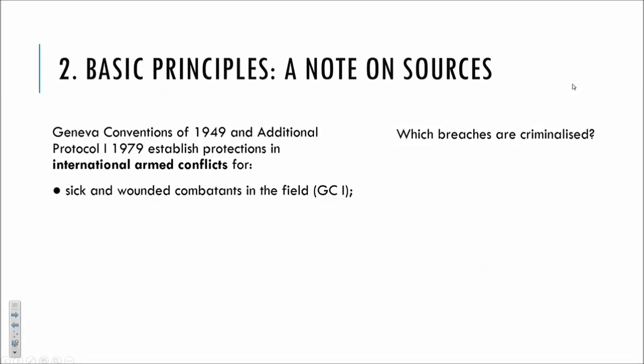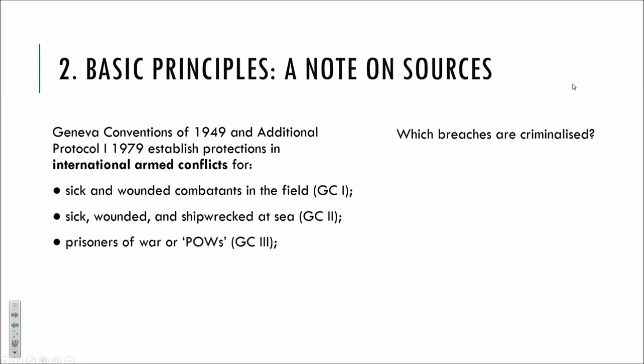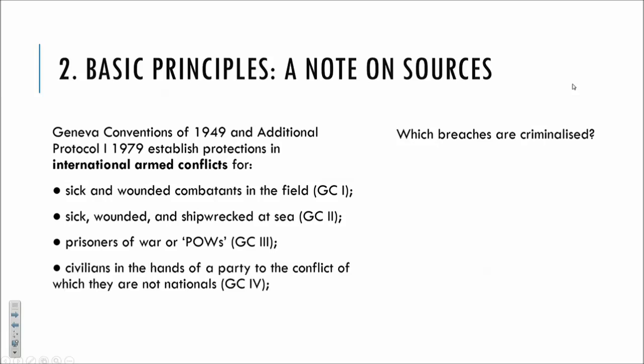The Geneva Conventions of 1949 established protections in international armed conflicts for: sick and wounded combatants in the field under Geneva Convention 1; the sick, wounded and shipwrecked at sea under GC 2; prisoners of war under GC 3; and civilians in the hands of a party to the conflict of which they are not nationals under GC 4. I'll refer to these as GC 1, 2, 3 and 4.